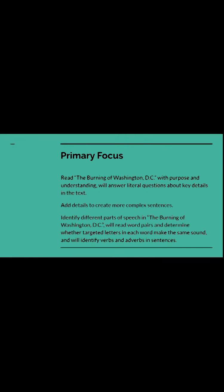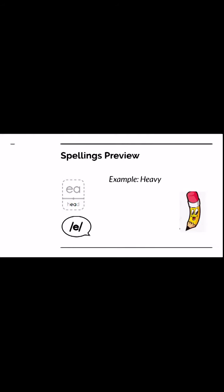Let's take a look at our primary focus slide. Your goals for today: you are reading The Burning of Washington, D.C. with purpose and understanding. You will answer questions about key details in the text. You will add details to create more complex sentences. You will identify different parts of speech in The Burning of Washington, D.C. And you will read word pairs and determine whether targeted letters in each word make the same sound. You will also identify verbs and adverbs in sentences. So a lot going on today.